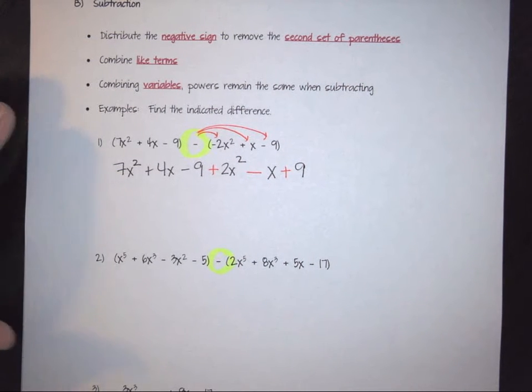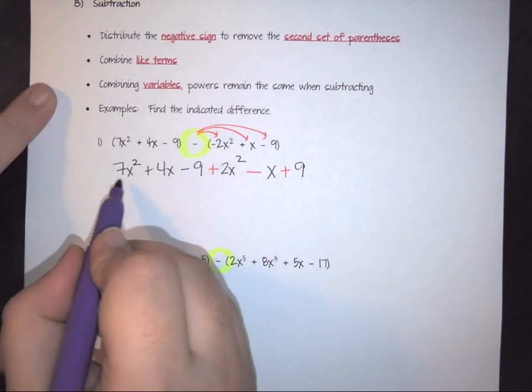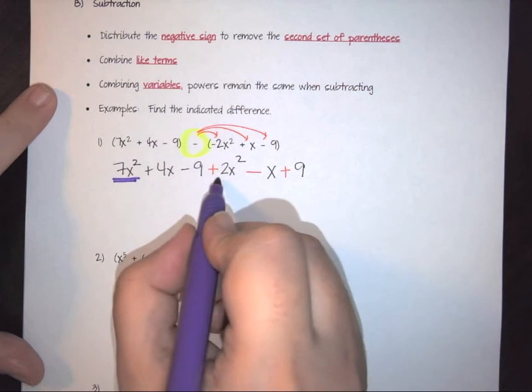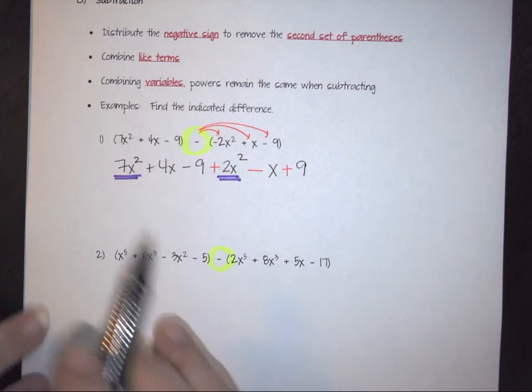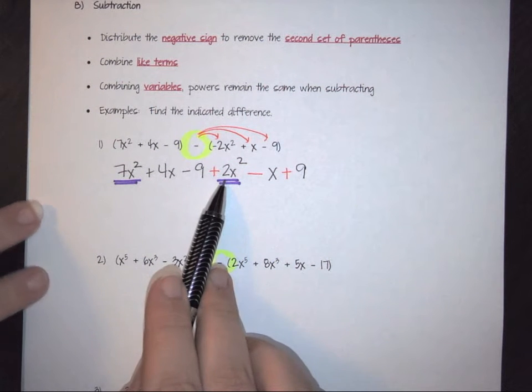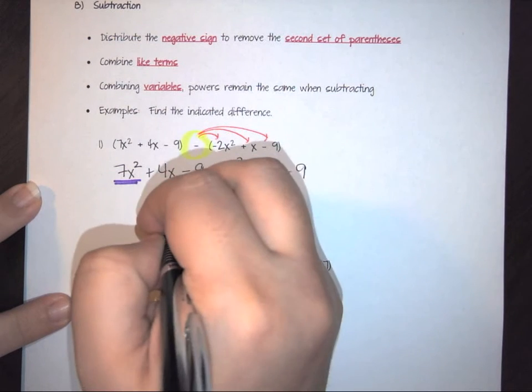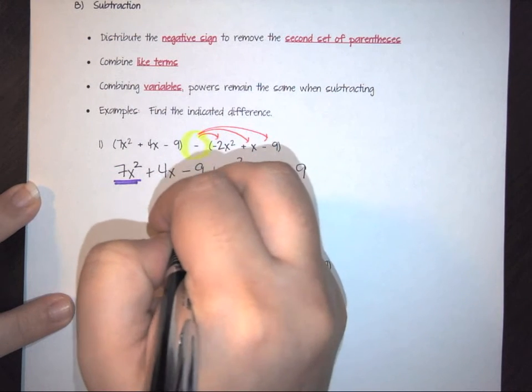So if we look at the first one, here we've got an x squared. And here we have an x squared. So in this case, I have positive 7 and a positive 2. When you combine them together, you get a 9x squared.